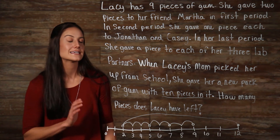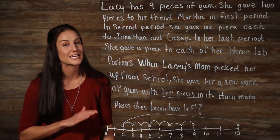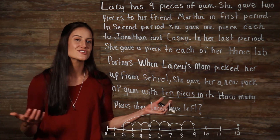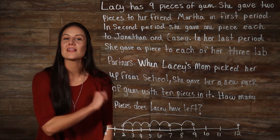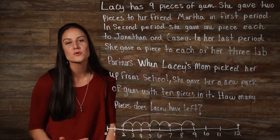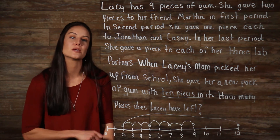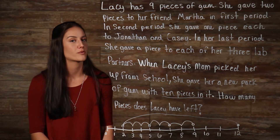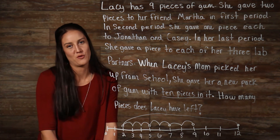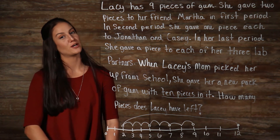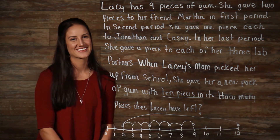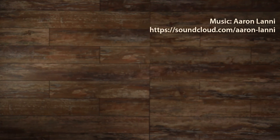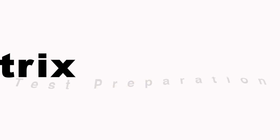Alright, so at the end of the day, Lacey's mom comes to the rescue and gives her ten more pieces, and she ends up with more pieces than she had in the beginning. Number lines can be really useful to help you visualize changes taking place and to help you keep track of where you are in your word problem. I hope that this video was helpful — be sure to subscribe to our channel below. See you guys next time, bye!